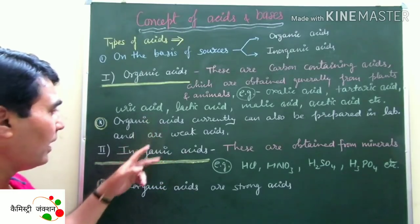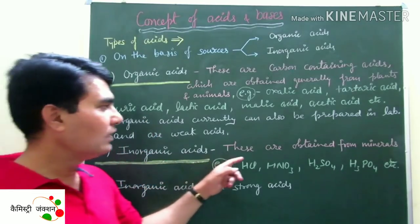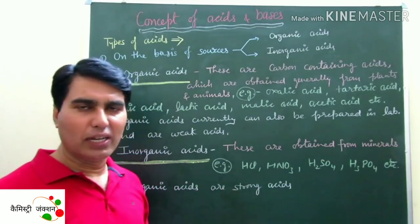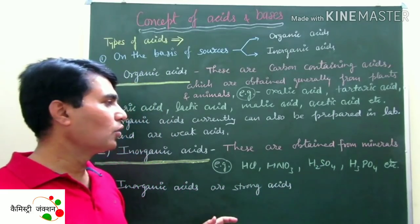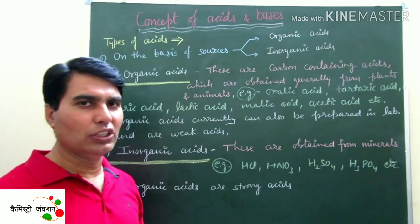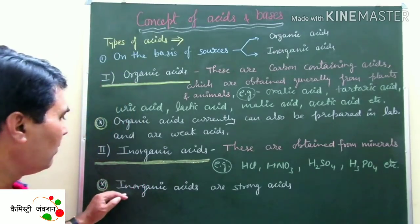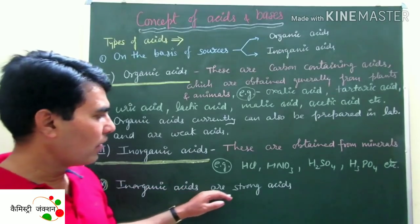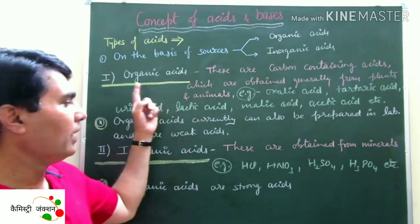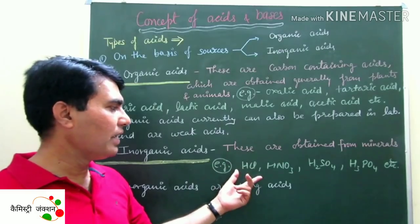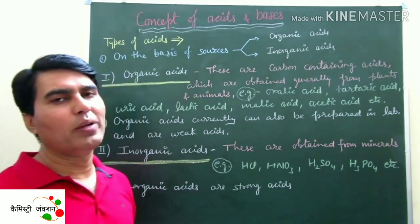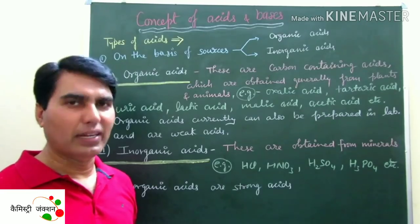The second type is inorganic acids — these are obtained from minerals. Minerals are dissolved in water to get acidic solutions. Importantly, inorganic acids are strong acids, stronger than organic acids. Examples include HCl, HNO3, H2SO4, and H3PO4 — these are common examples of inorganic acids.